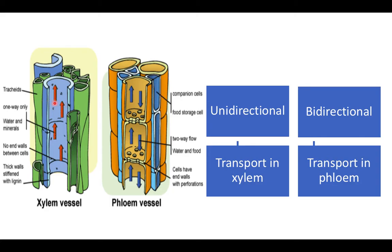In phloem, sieve tubes are present whose walls are perforated, meaning they have holes — which is why they are called sieve tubes. The cells have end walls, and companion cells work together with sieve tubes. To summarize: unidirectional transport occurs in xylem vessels, and bidirectional transport occurs in phloem vessels.